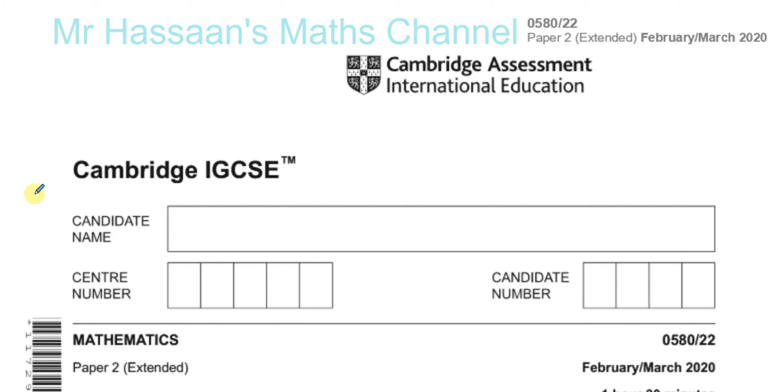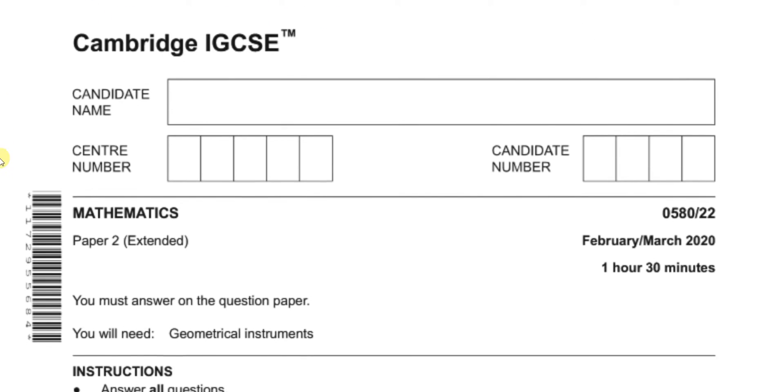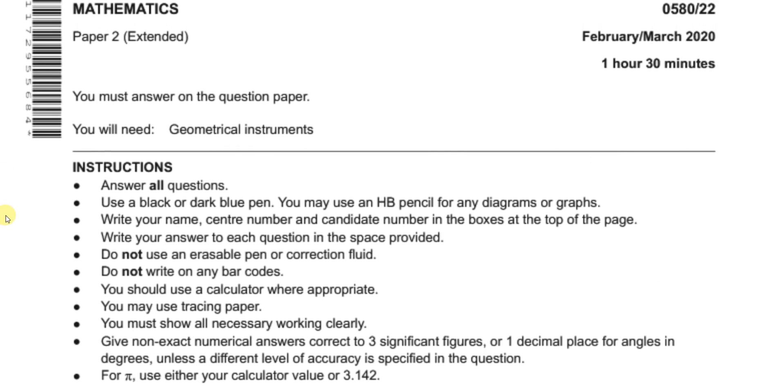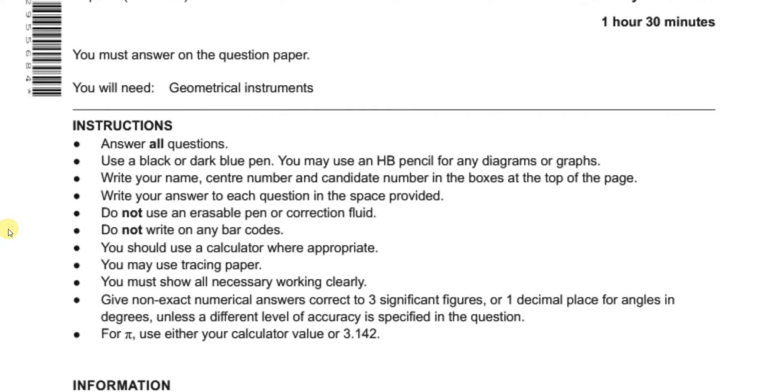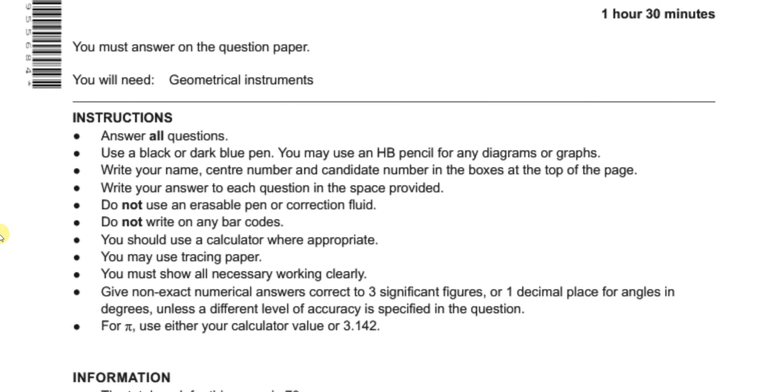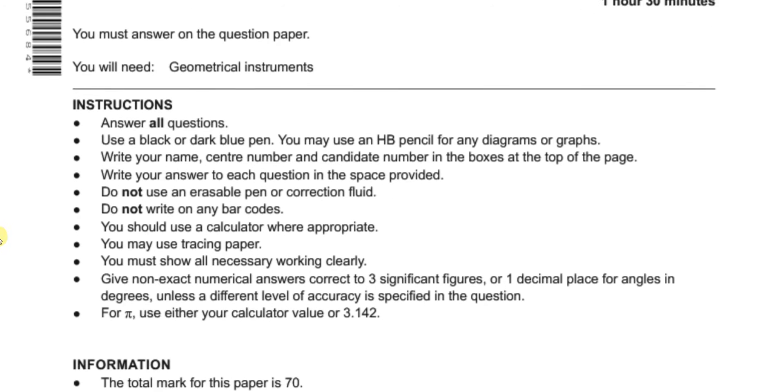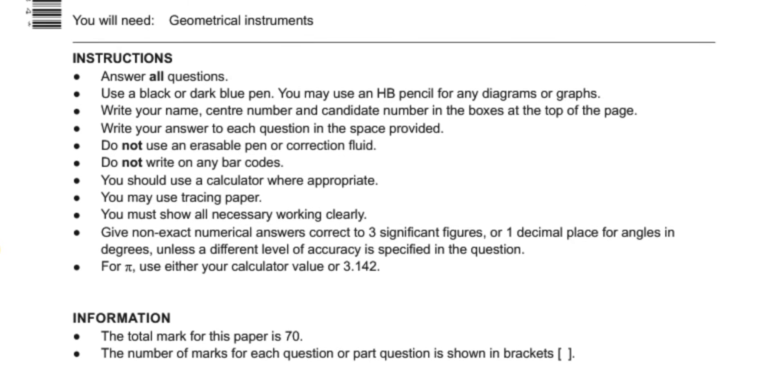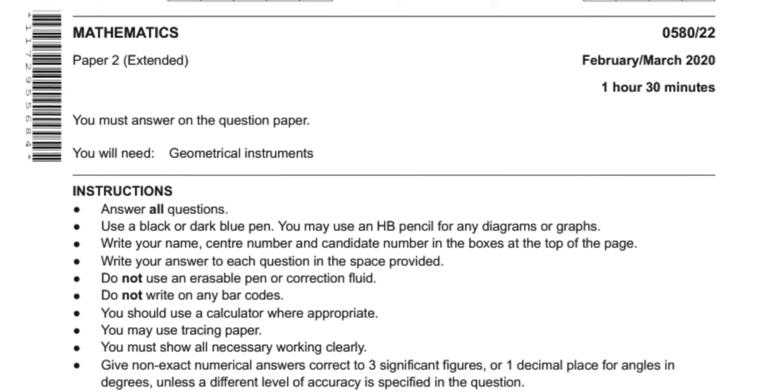So, this is the Paper 2. So, remember, the Paper 2 is out of 70 marks. There's normally about 20-odd questions in it. Sometimes it can be closer to 20, sometimes 25 or so. And here, they tell you the instructions. So, you have one and a half hours.